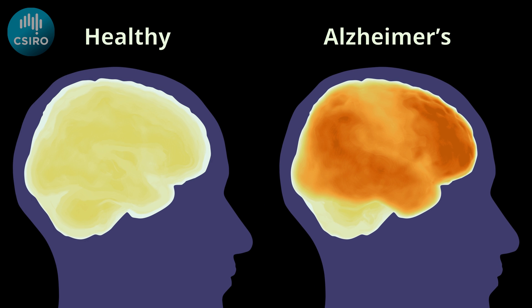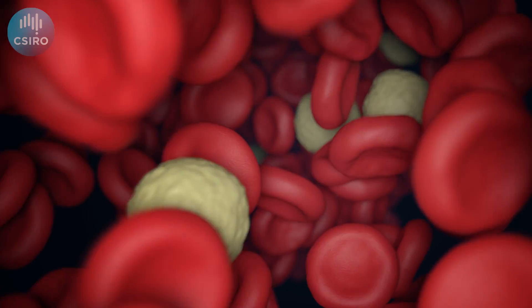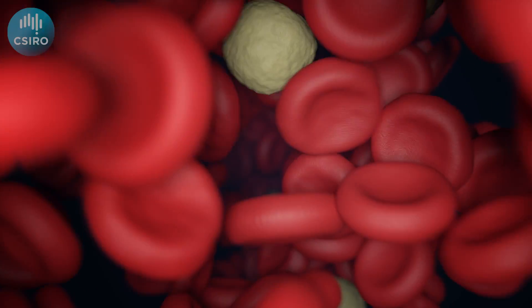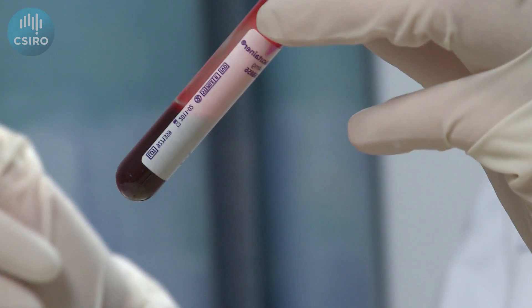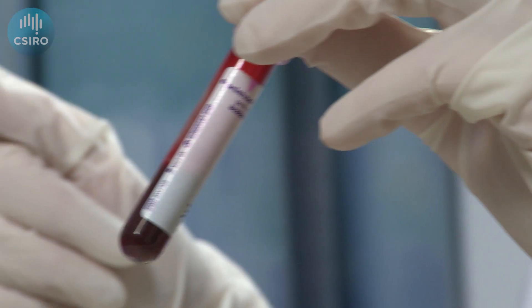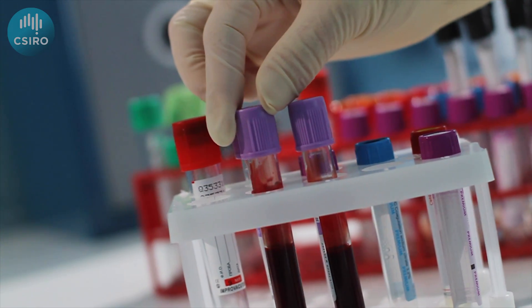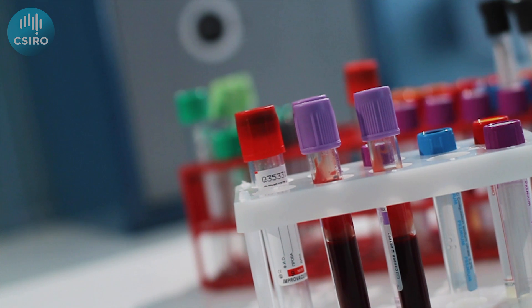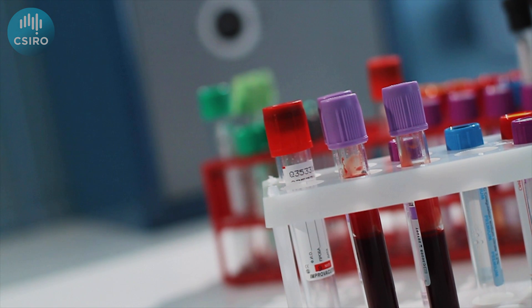The build-up of plaques in the brain can take place over several decades and is one of the main indications of Alzheimer's disease. Plaques can occur years before any loss in brain function is seen. Recently, scientists have identified changes in blood proteins that also occur years before the onset of Alzheimer's. This work has led to new blood tests that can easily and accurately diagnose Alzheimer's disease before symptoms occur. These new diagnostic tests, together with other rapid advances in the life sciences, mean we are closer than ever to solving the century-long enigma of Alzheimer's disease.